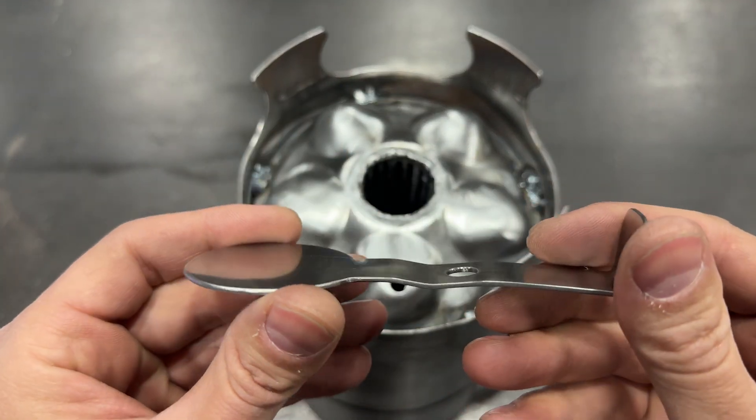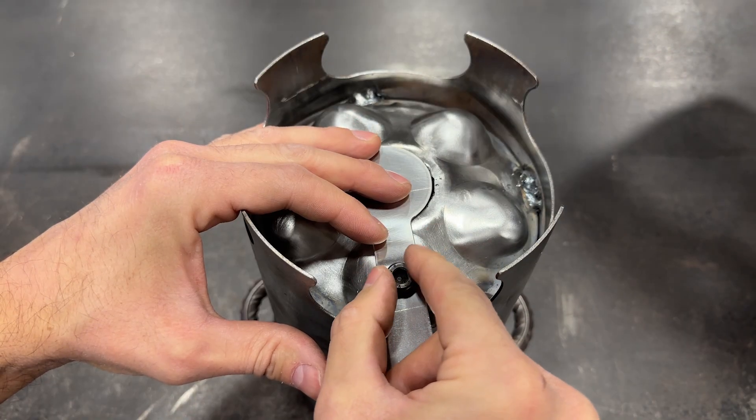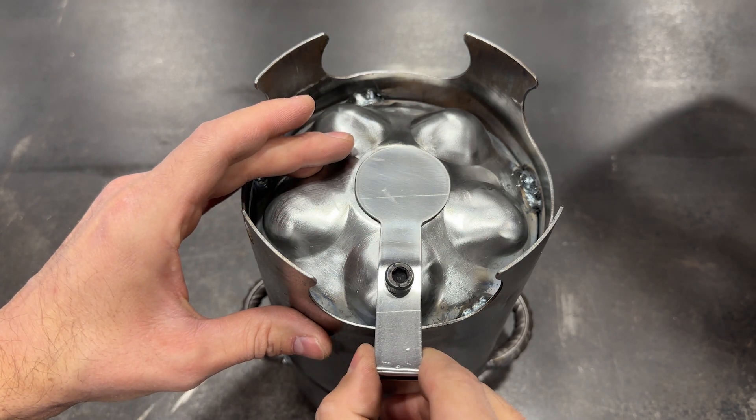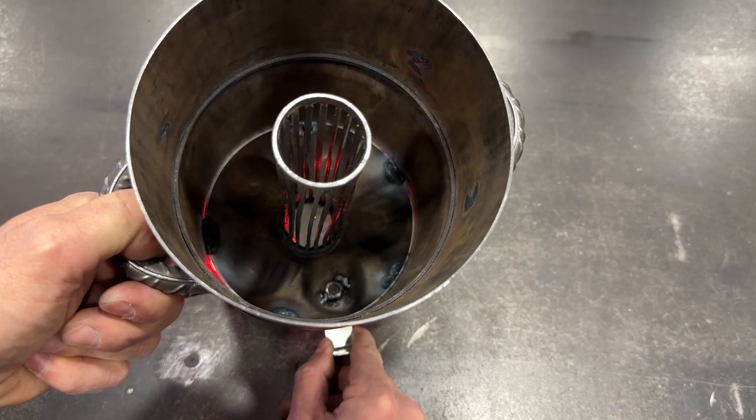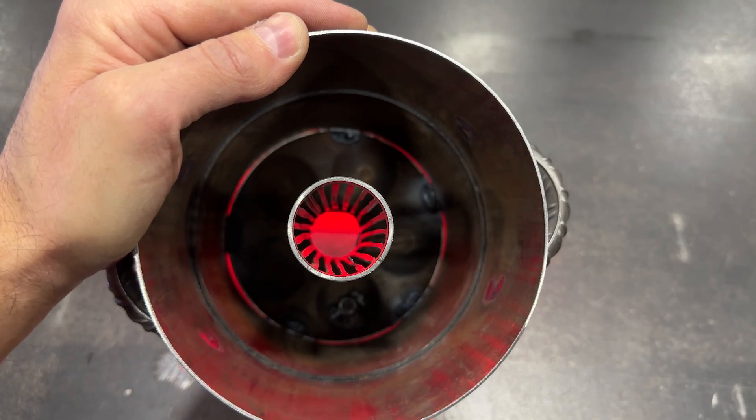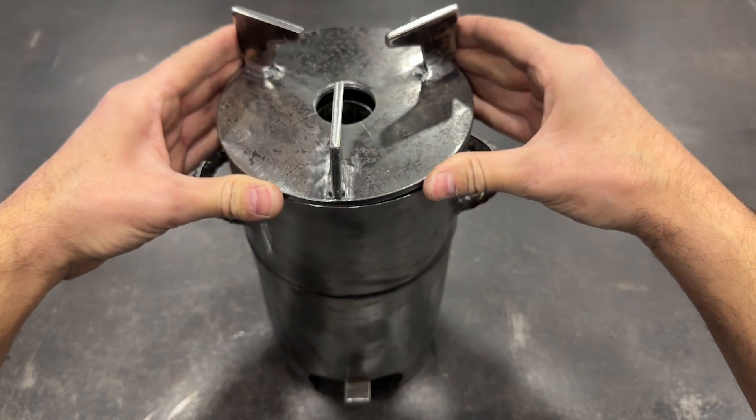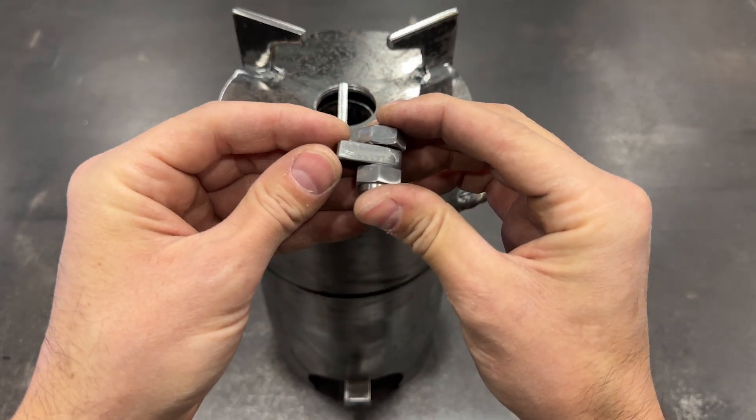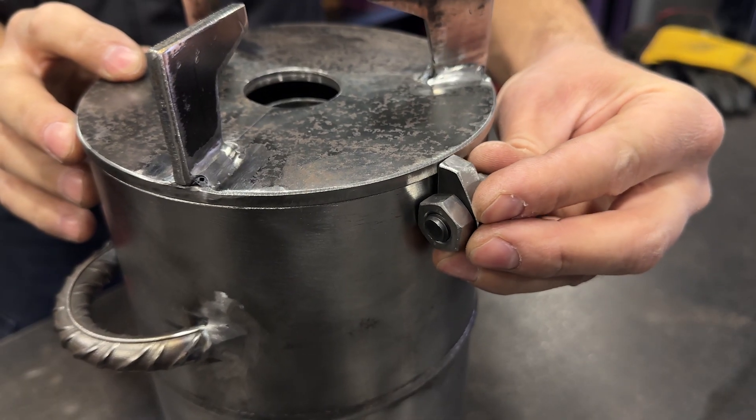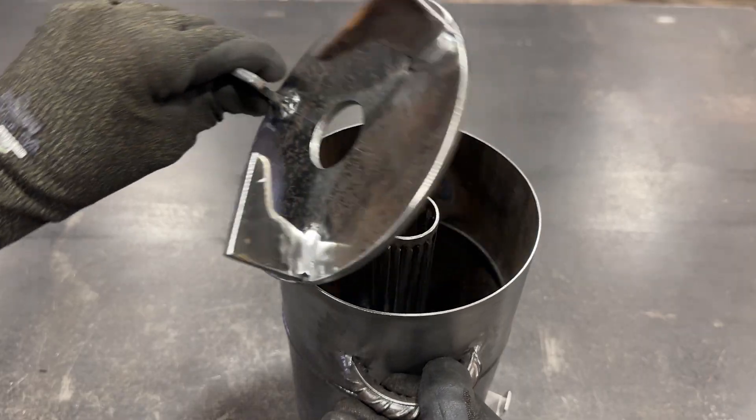Now we'll attach this trap door to the threaded hole we made previously. With this trap door, we can adjust the airflow to regulate the flame. All that's left is to weld a hinge to the lid. With this, we'll have finished manufacturing.